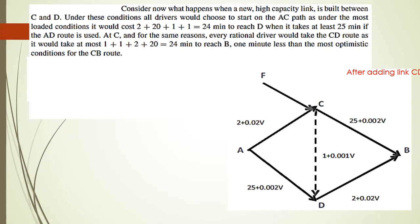Now consider that a high-capacity link is built between C and D — that is the dotted link. Under these conditions, all drivers would choose to start on the AC path because under the most loaded conditions it would cost only 24 minutes to reach D, whereas it takes at least 25 minutes if the AD route is used.